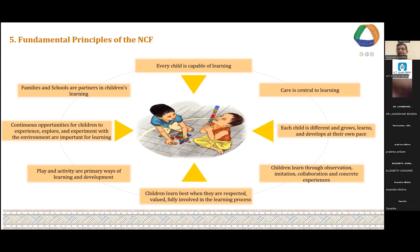Another principle is about how children learn. Children learn through observation, imitation, and collaboration. Most importantly, in the initial years we learn through concrete experience and sensory experiences. Another very important principle, more important in foundational stage, is about the care element. Children learn best when they are valued, cared for, respected, and involved in the learning process — we are not forcing them to learn what we want them to learn.